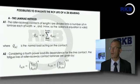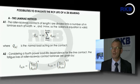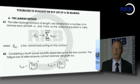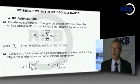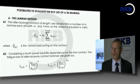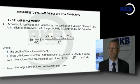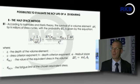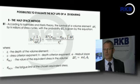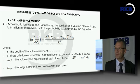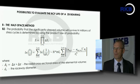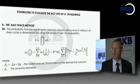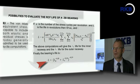The possibility of evaluating rolling contact fatigue life for a ZB bearing involves two methods: the usual laminum method presented in international standard ISO 281, and a new half-space method proposed by AKB using the Ioannidis and Harris theory. The new method implements the equivalent stress from distortion energy, and uses the product law of probabilities to obtain the final relation for the fatigue life of the bearing.